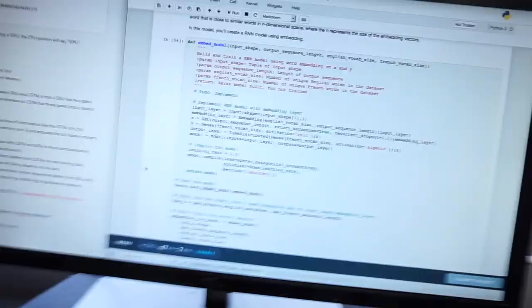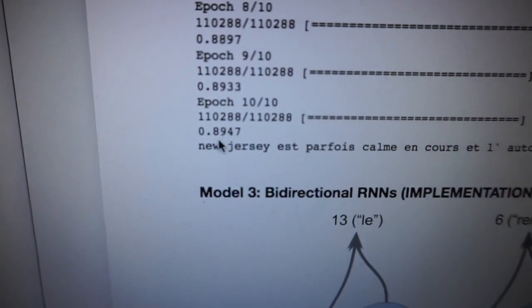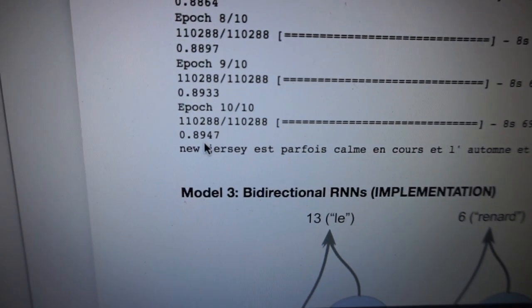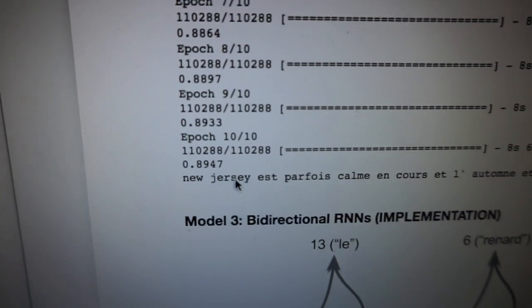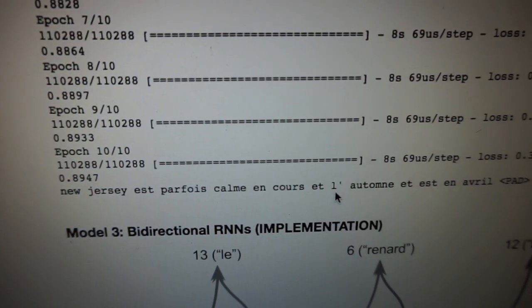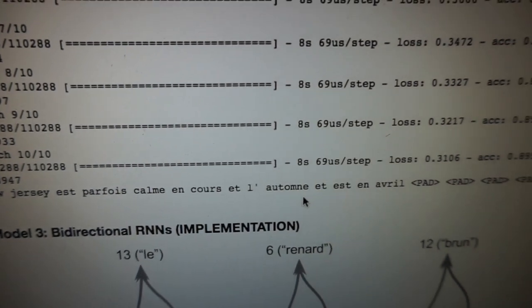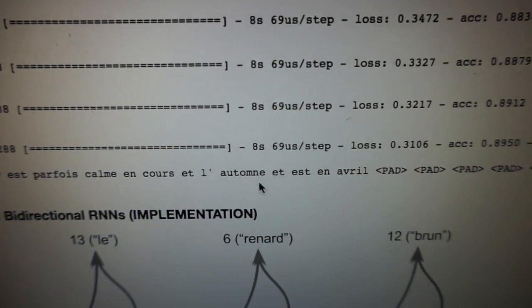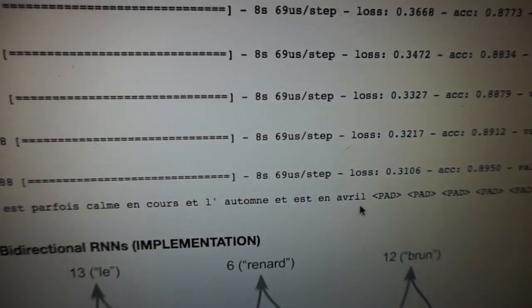Adding that embedding layer increased accuracy by 20%, from 67% to 89%. The French output is now something like 'New Jersey est parfois calm en course et autonomy et est en avril' — I'd never succeed in France, but that's progress!